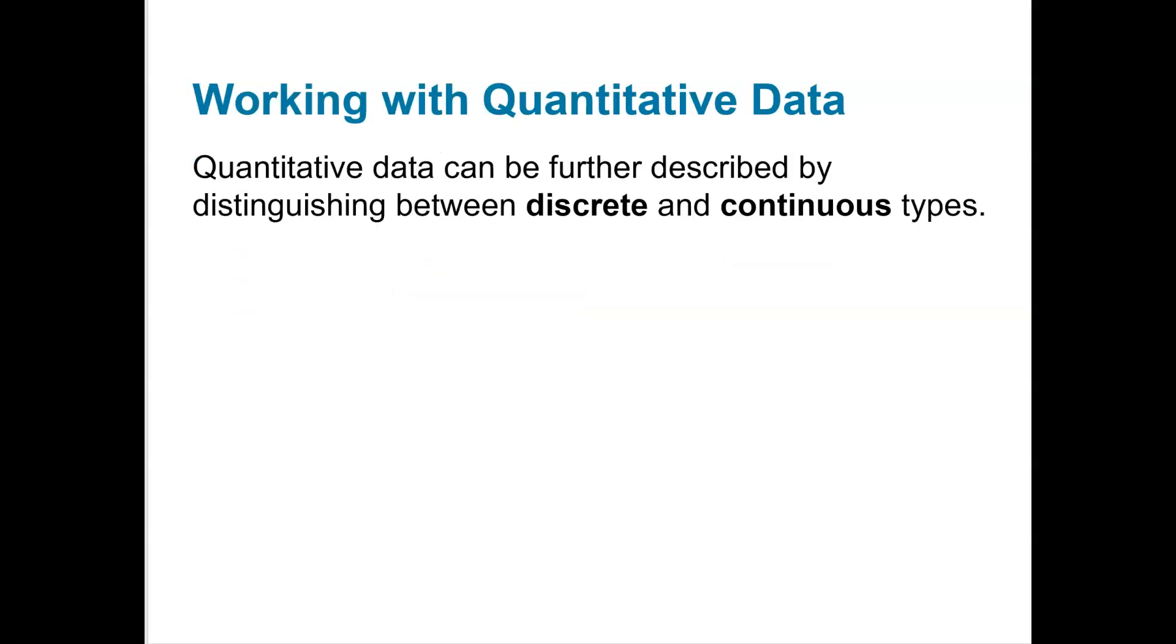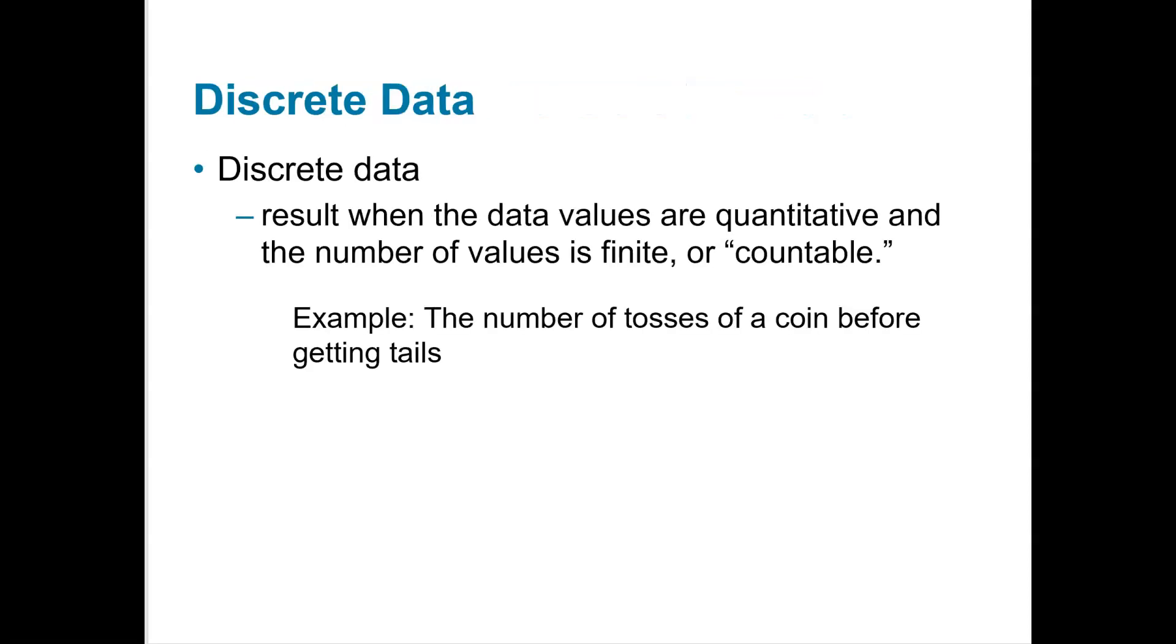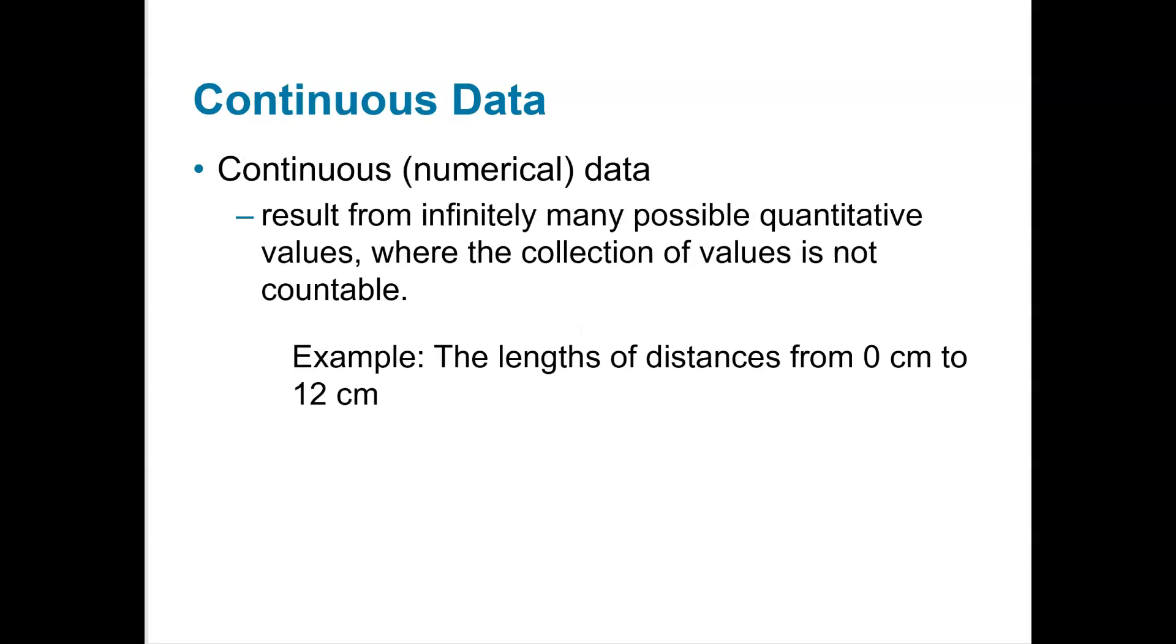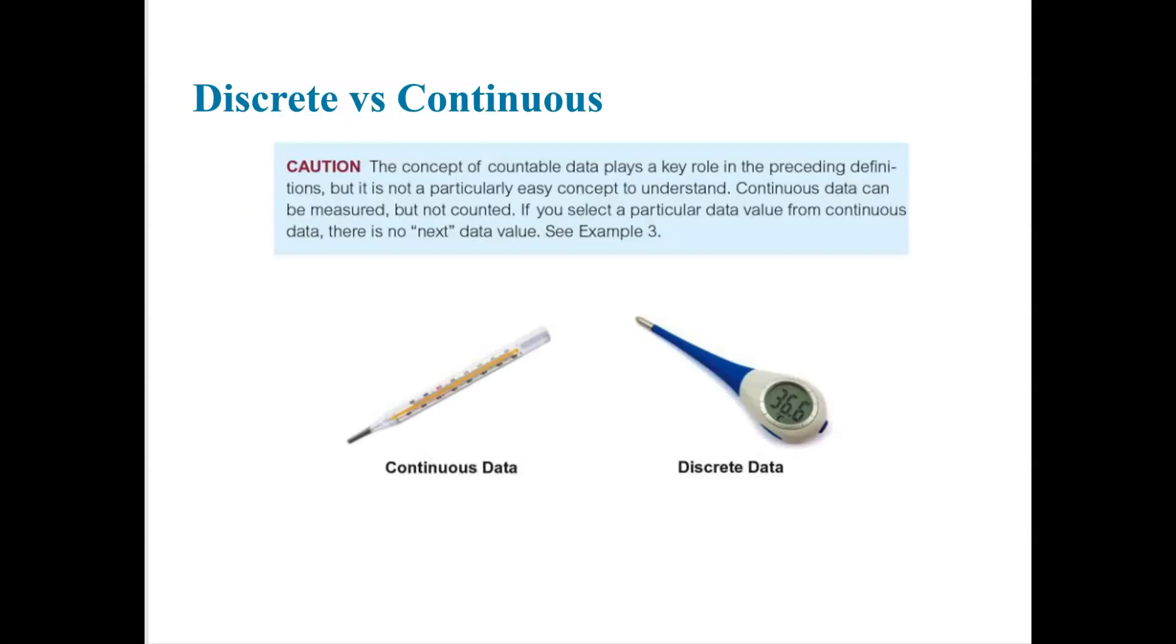So now just talking about quantitative data, that data that can be counted or measured, there's actually two types. We could have discrete and continuous. Now discrete is the result of counting. So the number of tosses of a coin before getting tails. We can count these numbers. Whereas continuous data has infinitely many possible quantitative values, and it's not really easy to count. So if we were to look at distances between 0 centimeters to 12 centimeters, we could keep adding decimal places in between more and more where we could never actually see a counting measure here. If you're a little bit confused, that's okay. It is a little bit tricky, but with more practice, you'll get the hang of it.